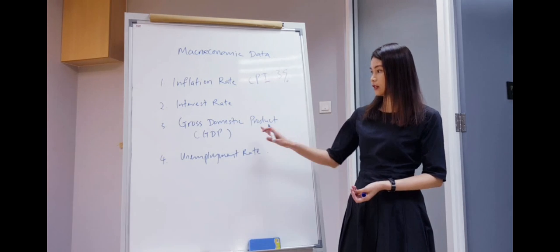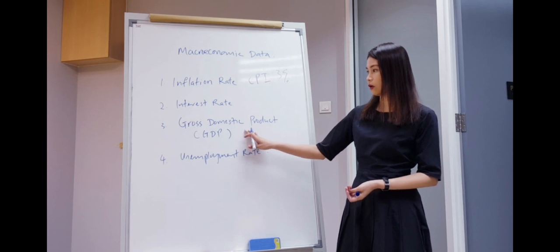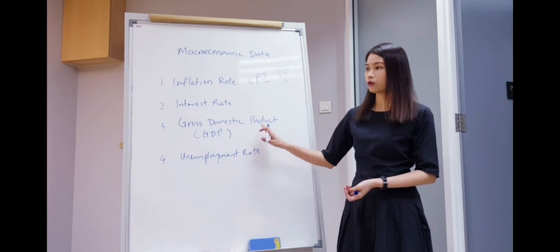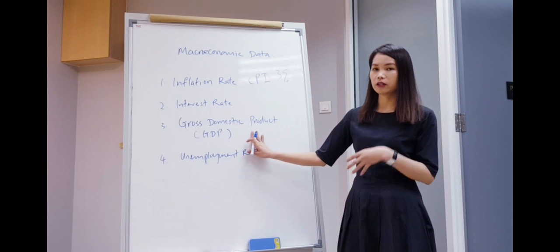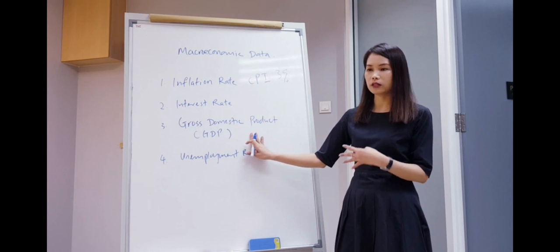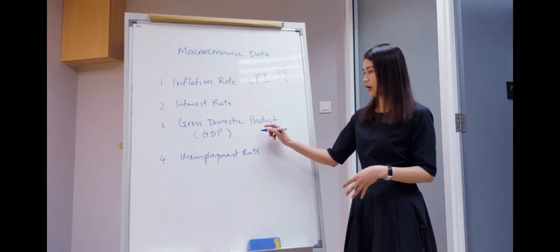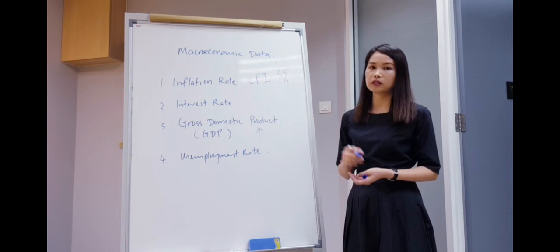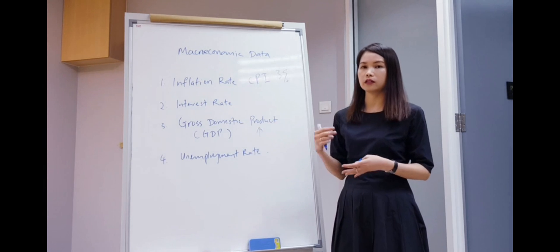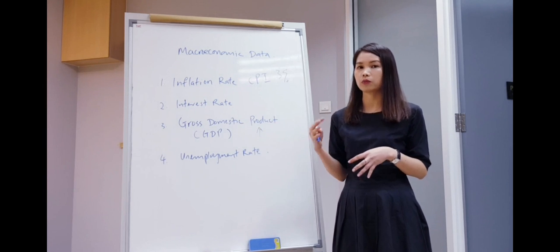The next economic indicator is called the gross domestic product, which is the GDP. This GDP is a very common name that you always see in the newspaper. Whenever we see that the GDP is rising, which is a good sign, that means the economy is growing. So how much is the GDP that is appropriate?